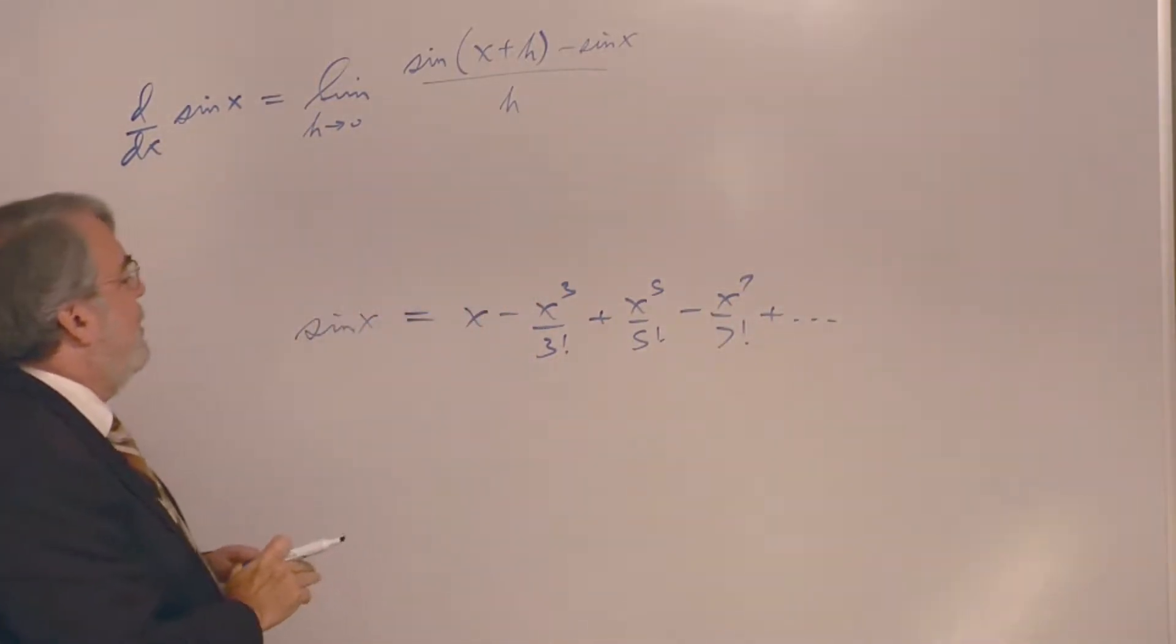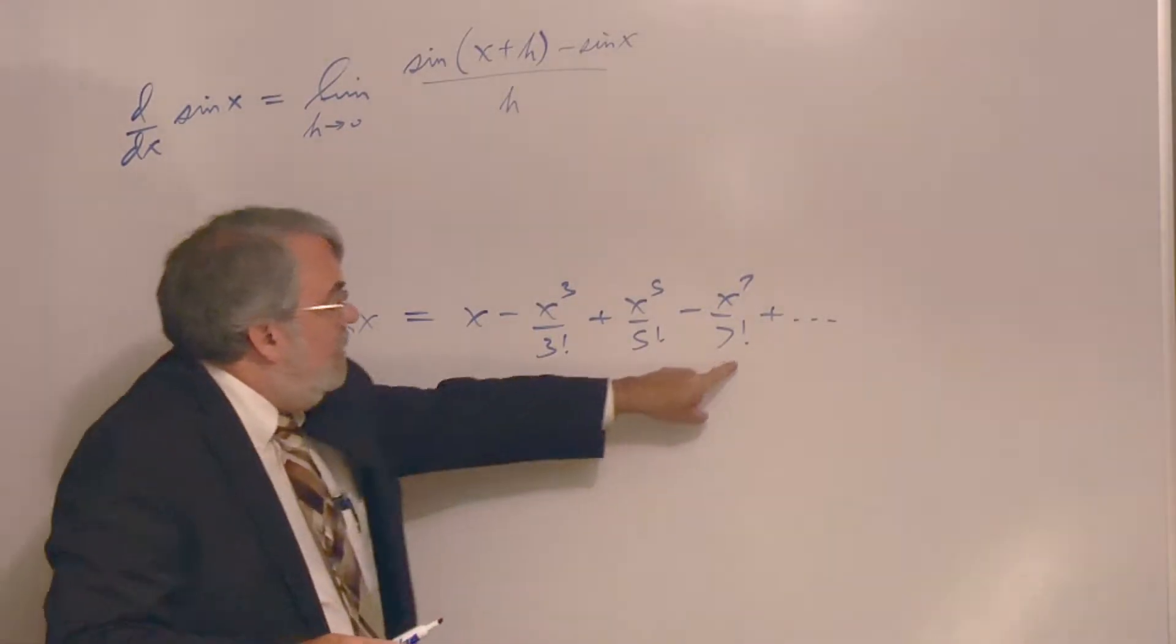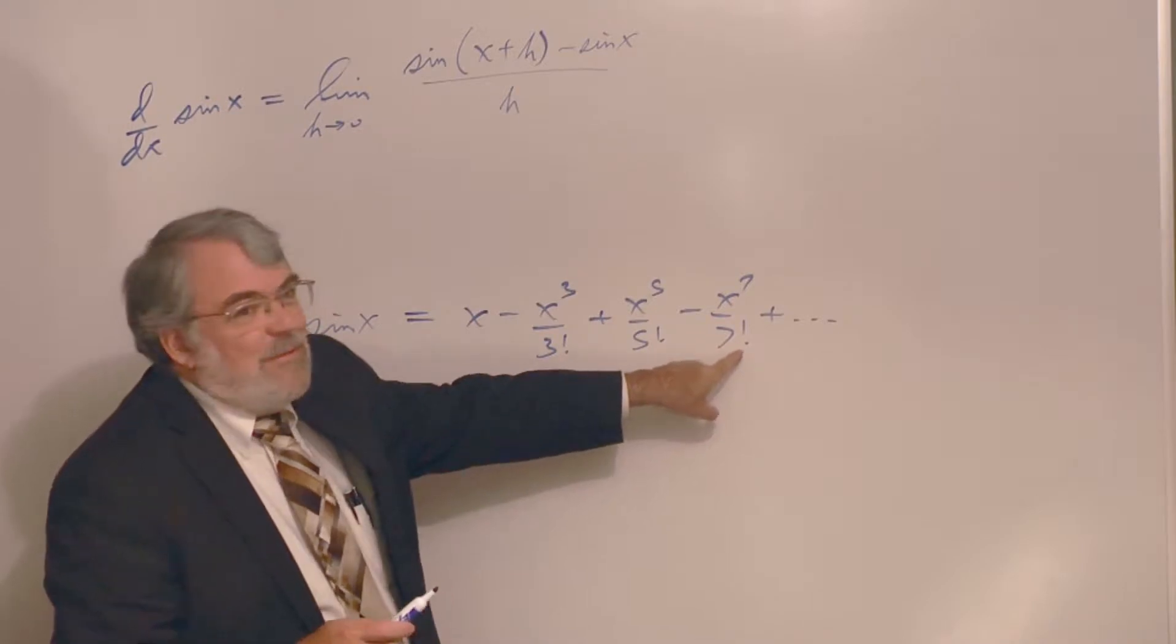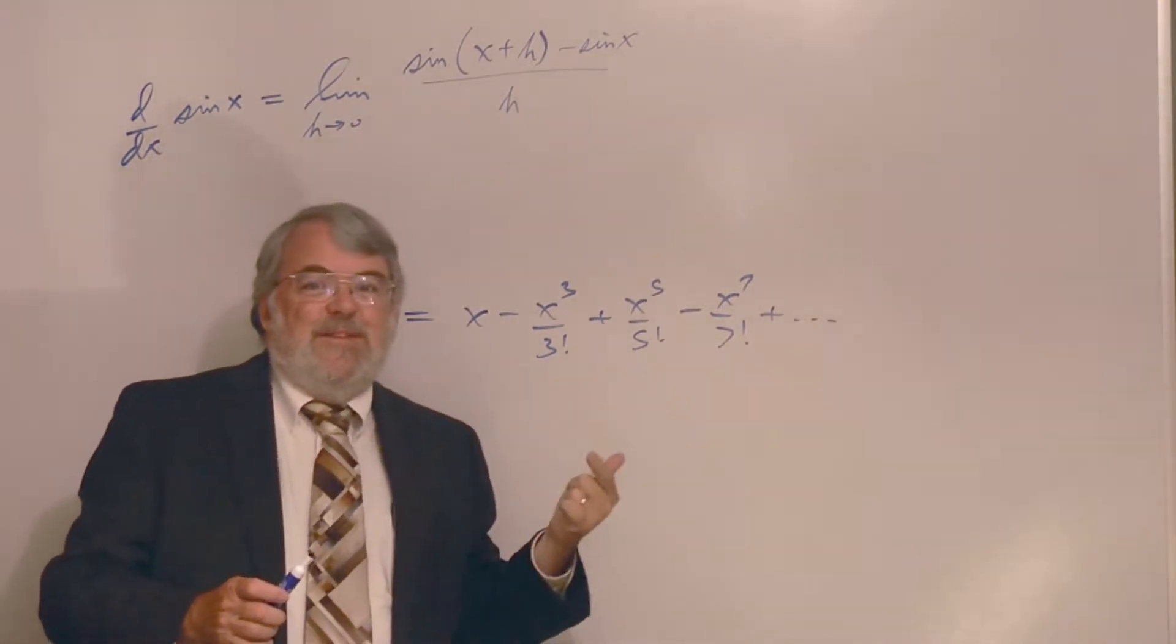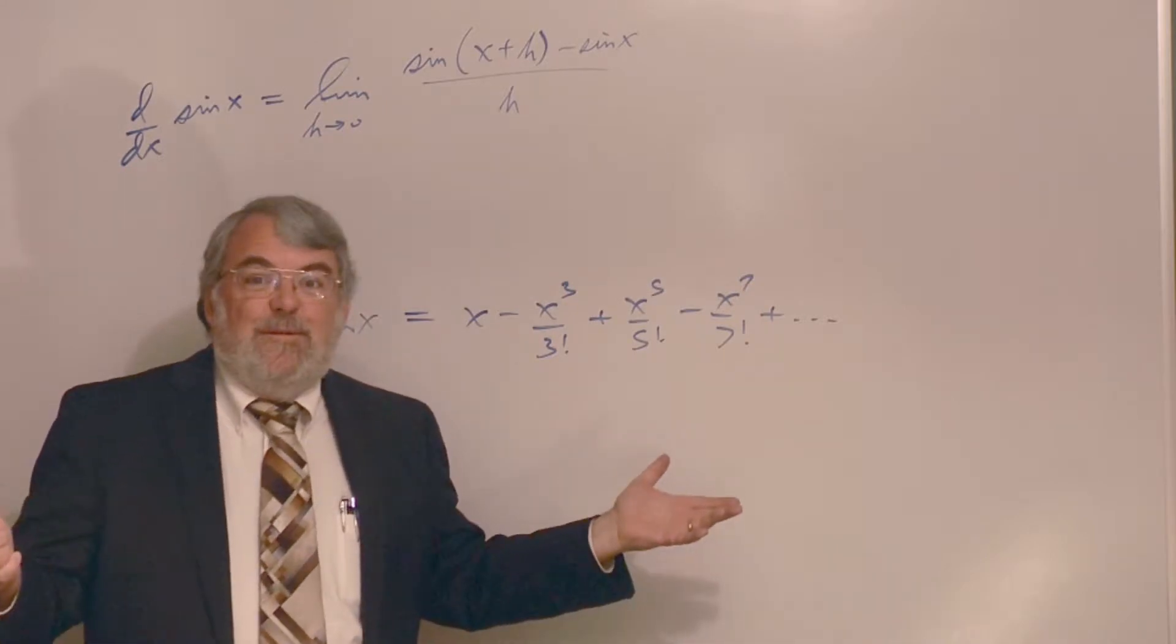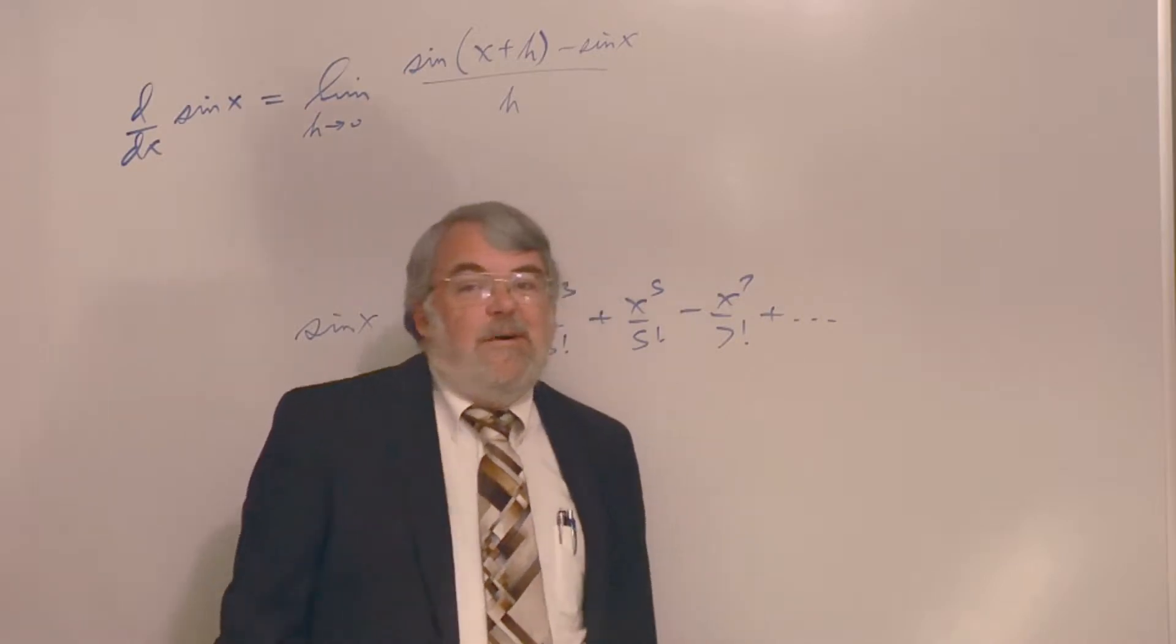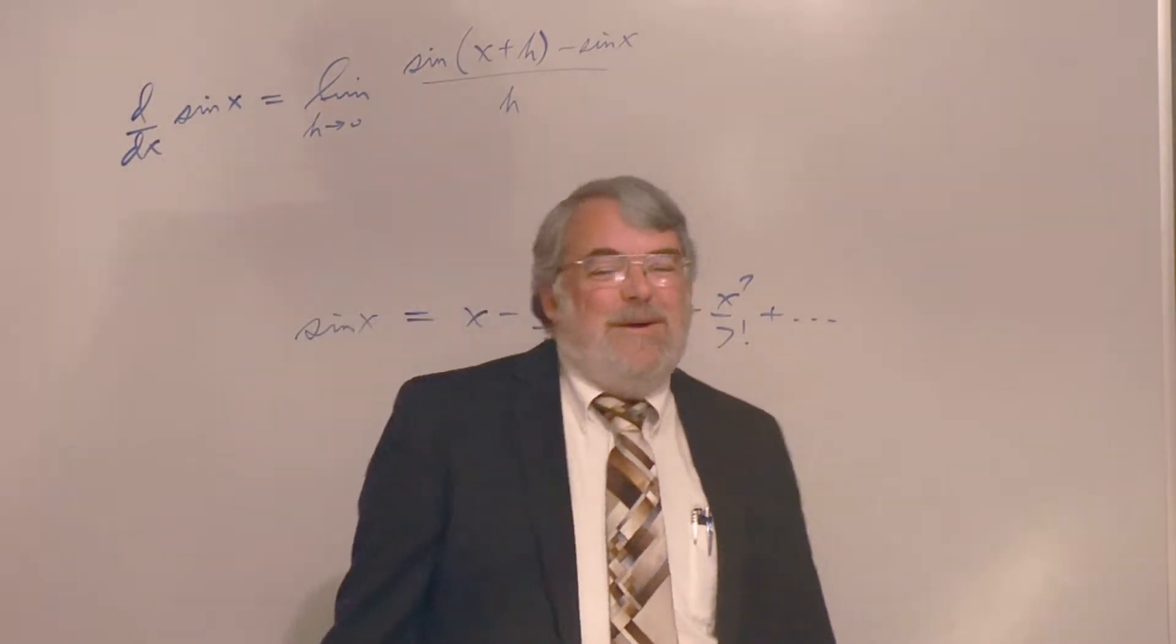These are called factorials. 7 factorial, an exclamation mark, means 7 times 6 times 5 times 4 times 3 times 2 times 1, which is 5,040. It looks like an infinite polynomial, infinite degree polynomial.